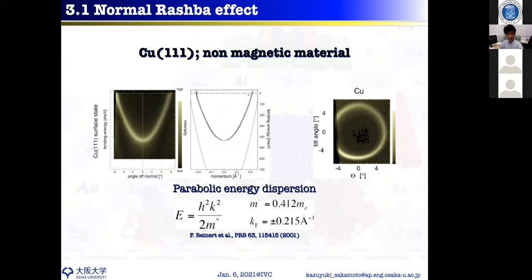At the surface, with only time-reversal symmetry remaining, we can write the Rashba Hamiltonian. From this, the spin direction is parallel to the surface and perpendicular to the wave vector (momentum). This is the Rashba spin in an ideal two-dimensional electron gas. The Rashba effect arises from a combination of spin-orbit coupling together with broken symmetry along the surface-normal direction — giving spin-polarized bands on surfaces and in atomic layer materials.